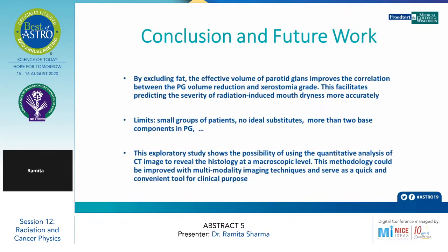In conclusion, by excluding the fat they have provided a method to find out the effective volume of the parotid glands, which improves the correlation between parotid gland volume reduction and Xerostomia grade. This facilitates predicting the severity of radiation-induced injury to the parotid glands. Limitations include a small group of patients and no ideal substitute. Future work: this experimental study shows the possibility of using quantitative analysis of CT-based data. The methodology could be improved with multimodality imaging techniques and serve as a quick and convenient tool for clinical purposes.